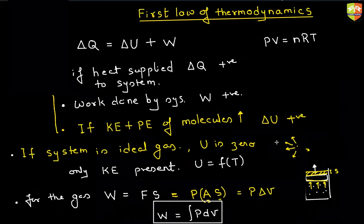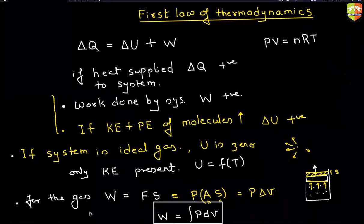So work done for the ideal gas is given as integral of PDV, but that is not true for solids or any other objects. So don't confuse PDV integral with any other work done. Only in case of a gas, this is valid. Is it clear to all of you? Let me find out some numericals based on this. We'll solve it.